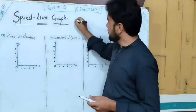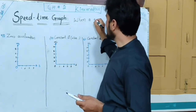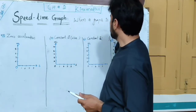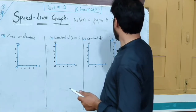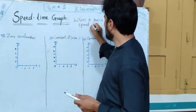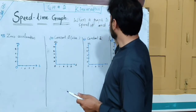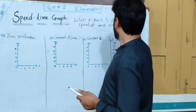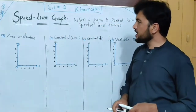Speed-Time Graph: when we plot a graph between speed V and time T, then it is called a Speed-Time Graph.